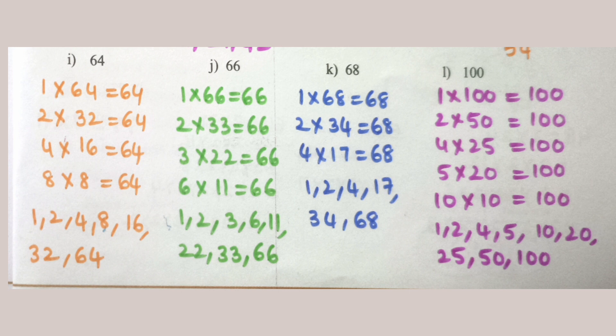68: 1×68=68, 2×34=68, 4×17=68. So factors of 68 are 1, 2, 4, 17, 34, 68. 100: 1×100=100, 2×50=100, 4×25=100, 5×20=100, 10×10=100. So factors of 100 are 1, 2, 4, 5, 10, 20, 25, 50, 100.